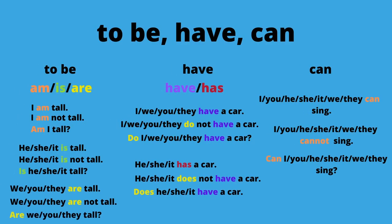The three special verbs are 'to be,' 'have,' and 'can.' For 'to be,' there are different forms depending on the pronoun. For 'I': positive — 'I am tall'; negative — 'I am not tall'; question — 'Am I tall?' — there is no 'do.' For the third person he, she, it, use 'is': positive — 'He is tall'; negative — 'He is not tall'; question — 'Is he tall?' For we, you, and they, use 'are': 'You are tall,' 'You are not tall,' 'Are you tall?'